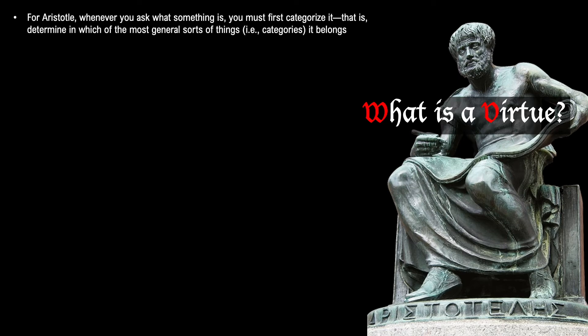For Aristotle, whenever you ask what something is, you must first categorize it — that is, determine in which of the most general sorts of things, i.e., categories, it belongs. So when we ask what is virtue, the first step is to figure out which of the categories virtue belongs to. We have to categorize virtue. For Aristotle there are ten categories, that is, ten most general sorts of things.